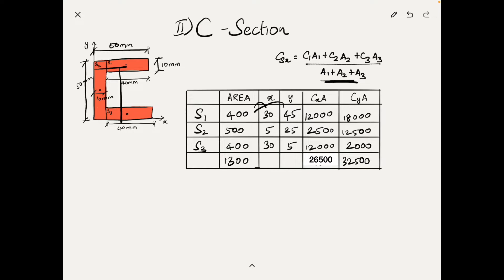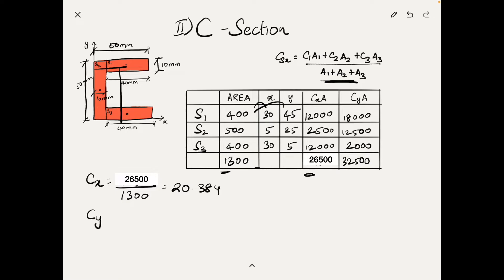To get the X coordinate of the centroid: CX = ΣCxA / A = 26,500 / 1,300 ≈ 20.38 mm. Similarly, CY = ΣCyA / A = 32,500 / 1,300 = 25 mm. So the centroid of the C-section lies approximately 20.38 mm from the Y-axis and exactly 25 mm from the X-axis — at the middle height of the section. We can mark the centroid of the C-section there.